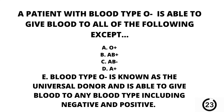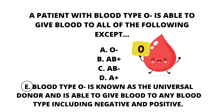Question number 27. A patient with blood type O negative is able to give blood to all of the following except: O positive, AB positive, AB negative, A positive. Or blood type O negative is known as the universal donor and is able to give blood to any blood type including negative and positive. Our answer here is E. Blood type O negative is known as the universal donor and is able to give blood to any blood type including negative and positive.